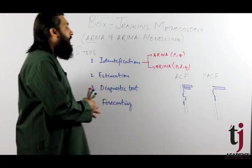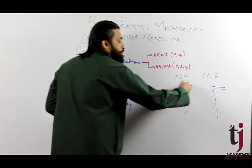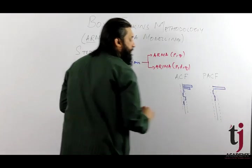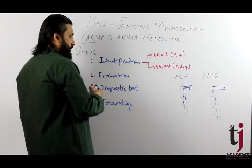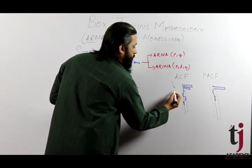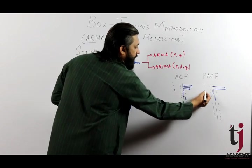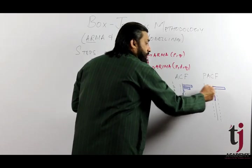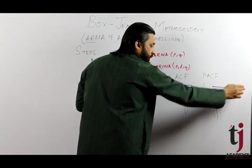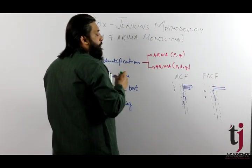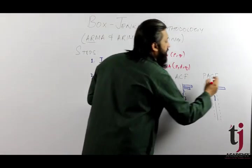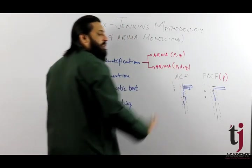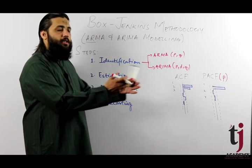Remember: the points that are visible where the 5% significance level is crossed are the significant points. For example, lag 1, lag 2, lag 3 — these are the significant lags. In the PACF, the number of peaks that cross the significance level determines the order of the auto-regressive term.